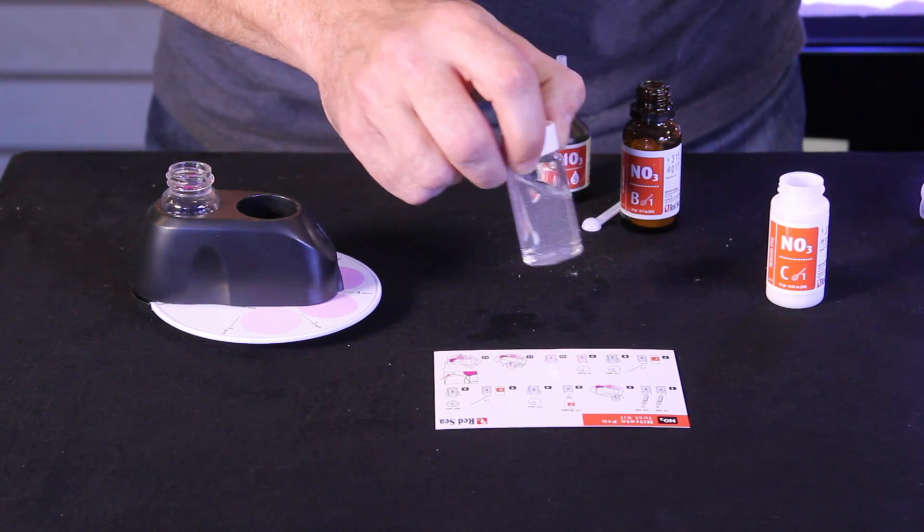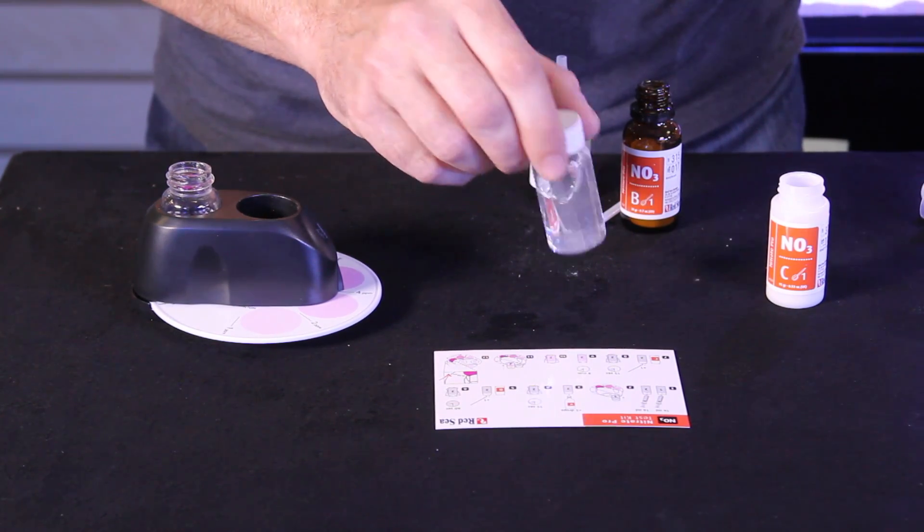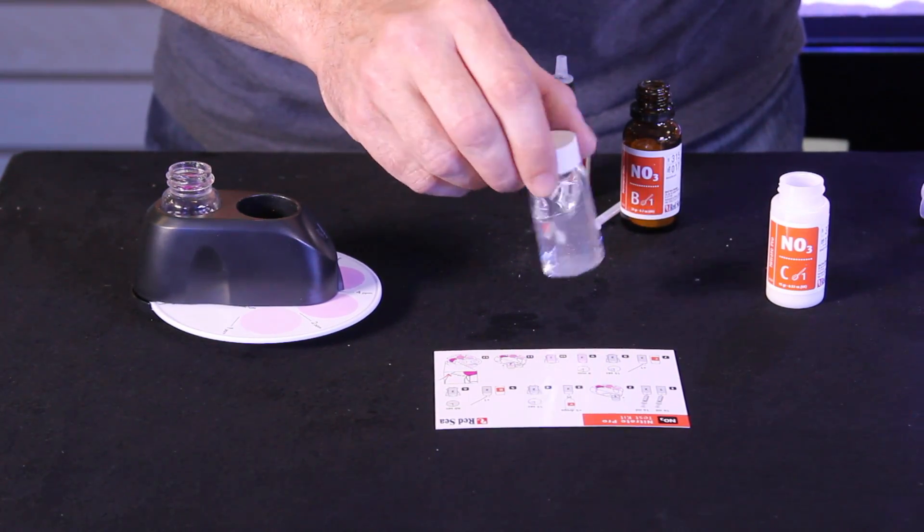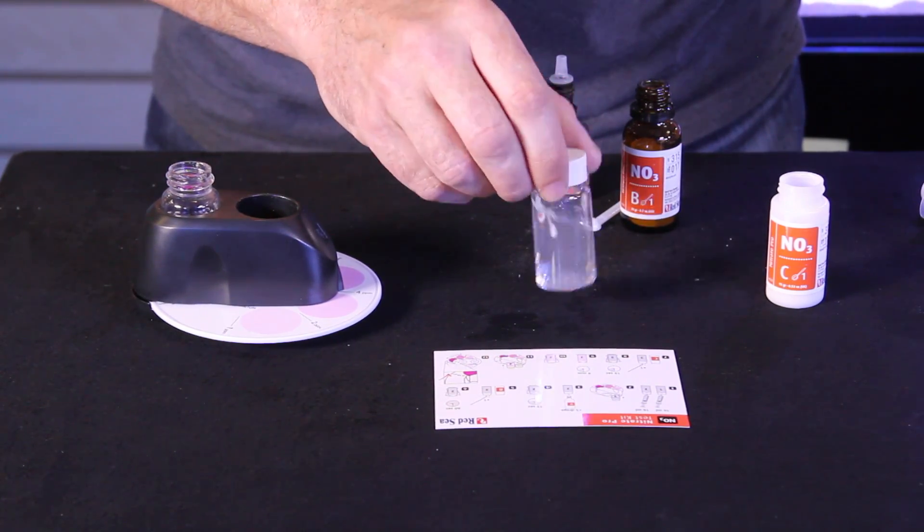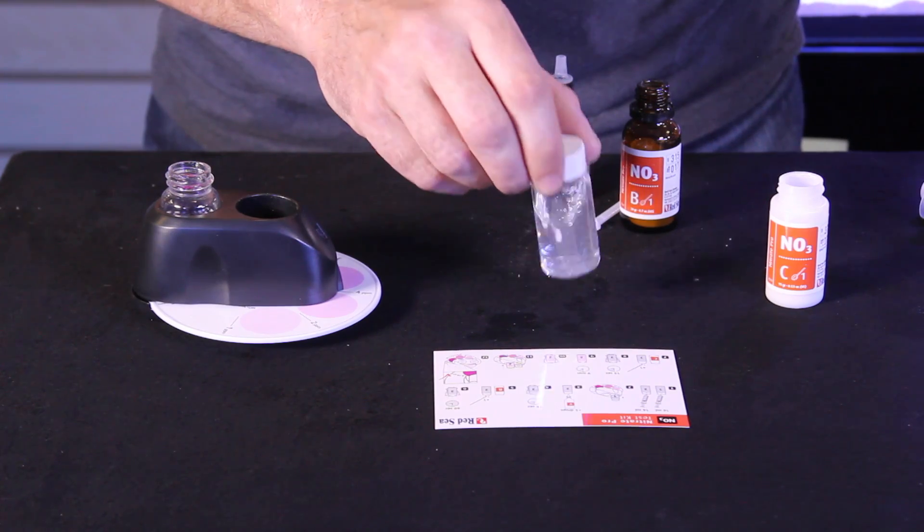But we're going to go ahead and complete the test and show you how to do it. Keeping phosphate under control is very important for controlling the growth of nuisance algae and also getting your corals to open fully and color up nicely.